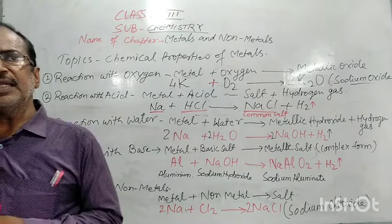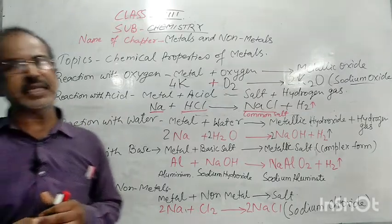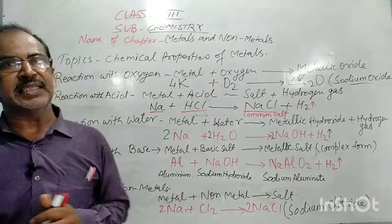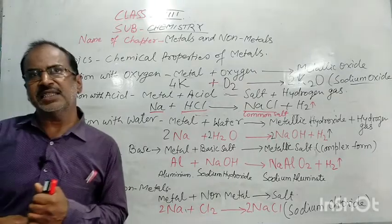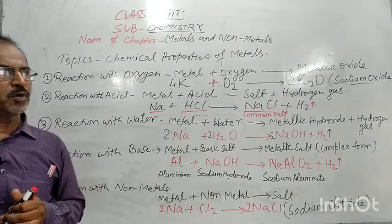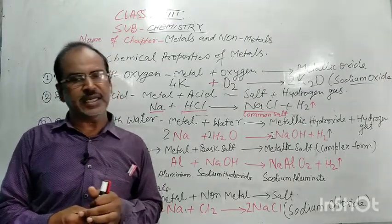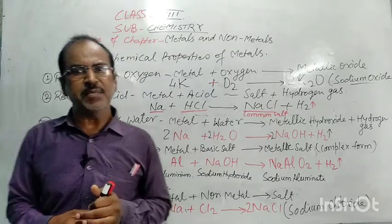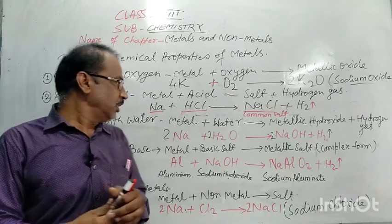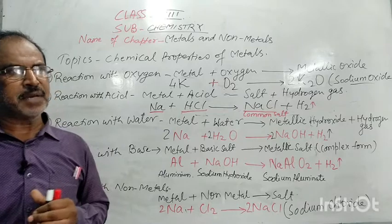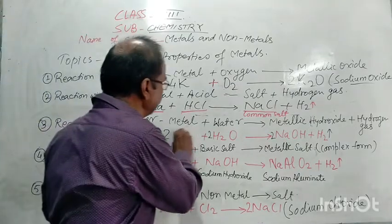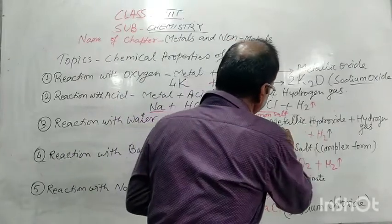Third example: reaction with water. When a metal reacts with water, it gives metallic hydroxide and hydrogen gas. Metals are of three types: most reactive (highly reactive), moderate metals, and noble metals. Highly reactive metals like sodium and potassium easily react with water. That is why we must store sodium and potassium very carefully — containers must be closed; they are kept in kerosene and away from oxygen, water, and moisture. When sodium metal is put into water, sodium hydroxide is formed and hydrogen gas is evolved. Similarly, potassium forms potassium hydroxide and hydrogen gas.